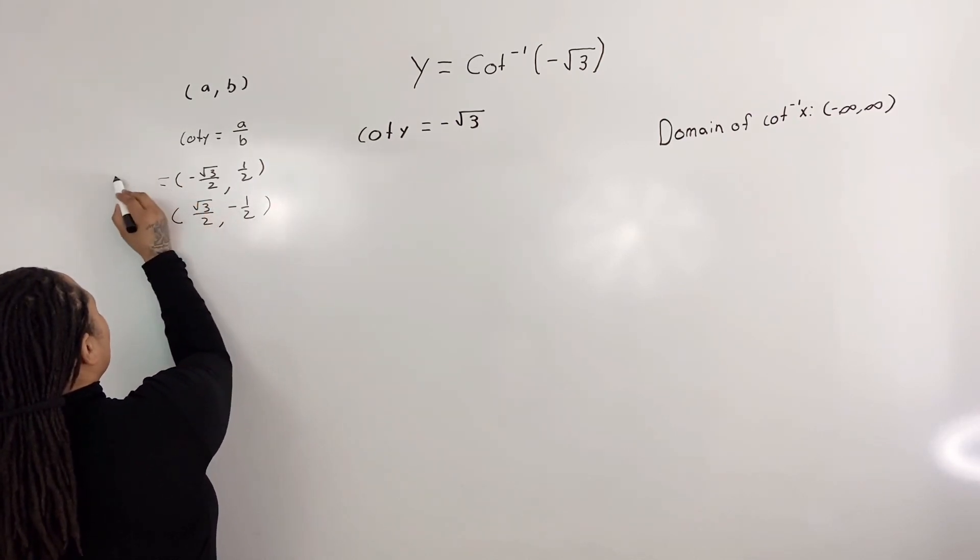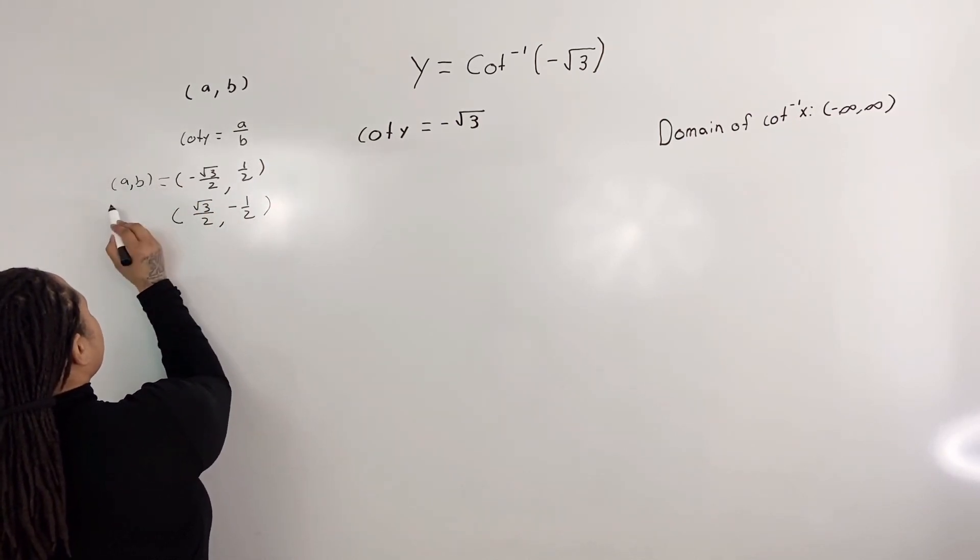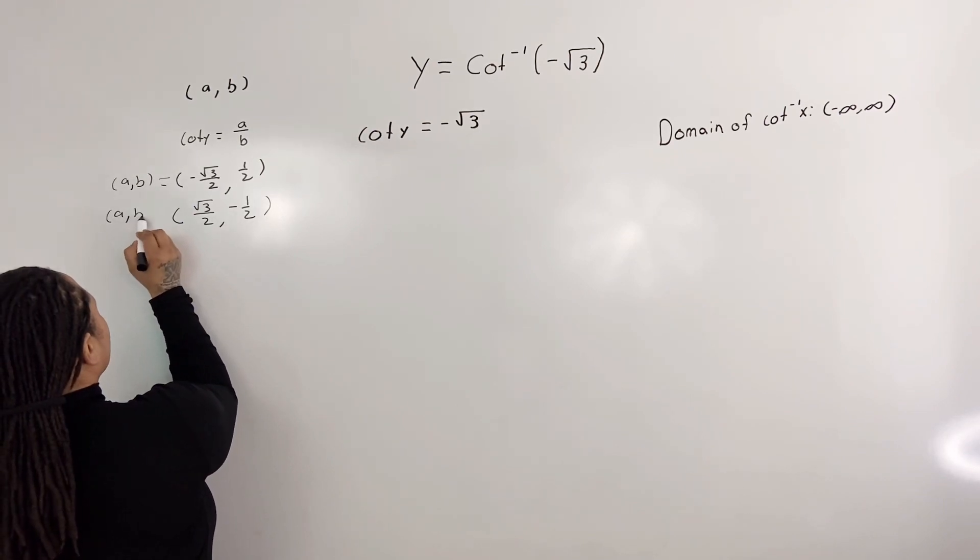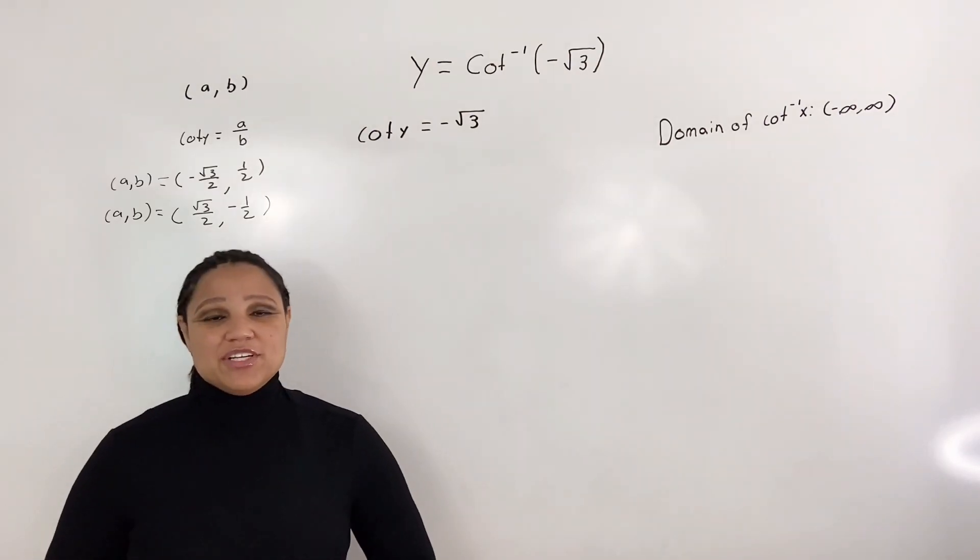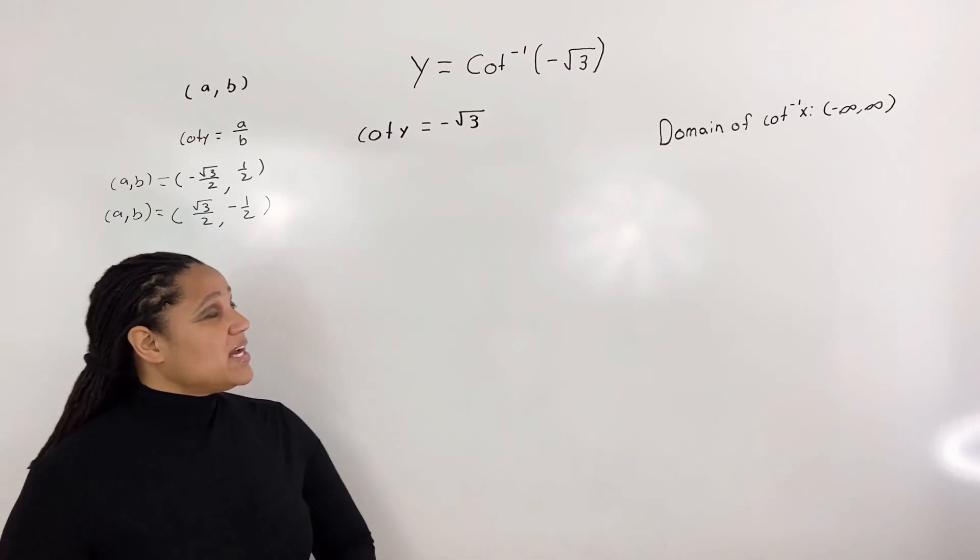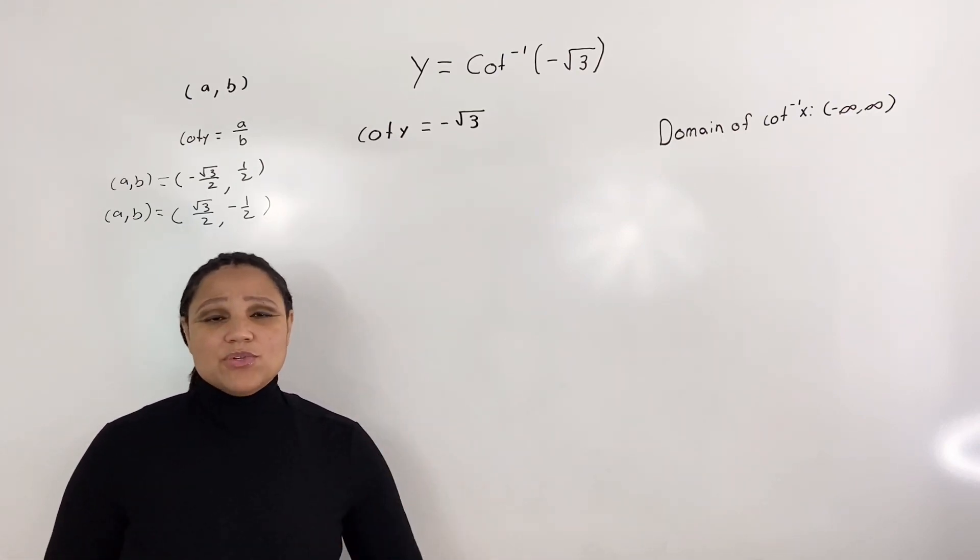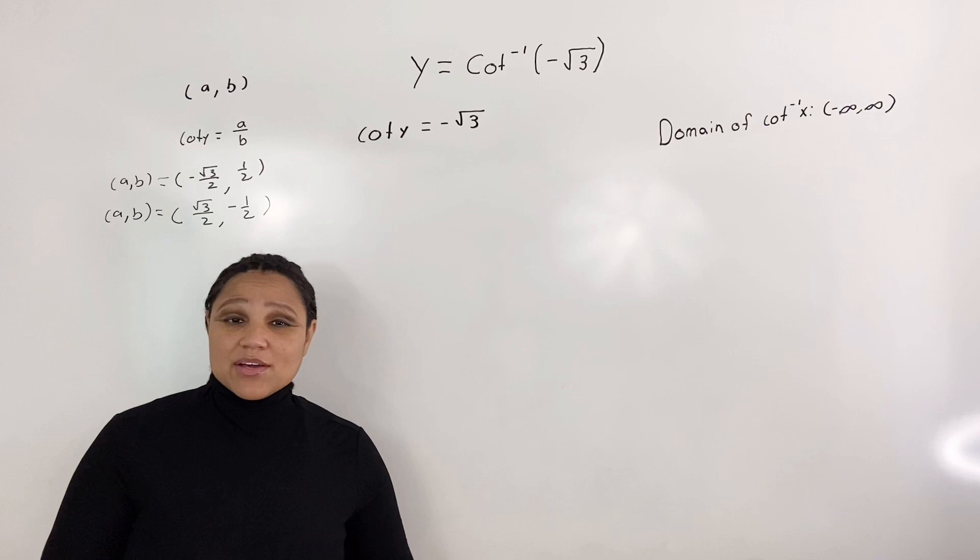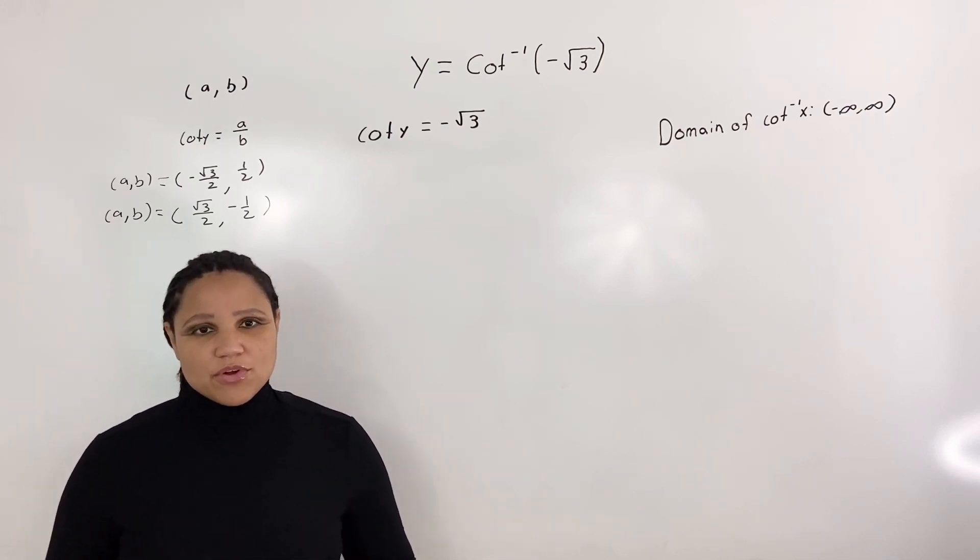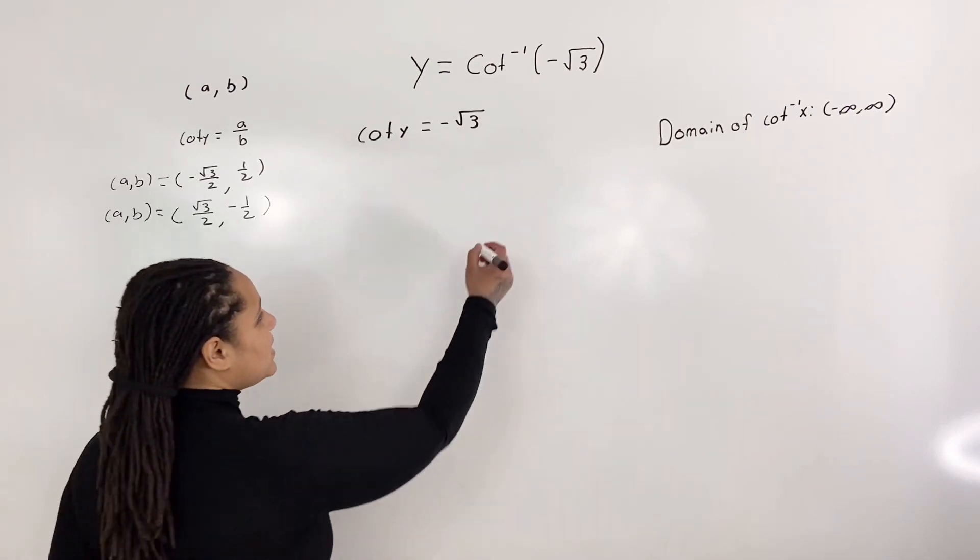And that's given coordinates a, b. So on the unit circle, we get cotangent of y equals negative root 3 in only two locations. And that's the second quadrant or the fourth quadrant. So if I draw my unit circle,